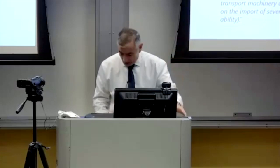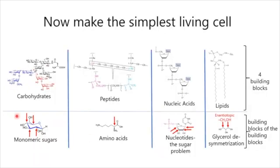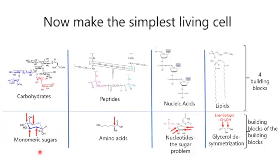Remember the requirements we said the cell has to have. First you have to make all the monomeric sugars, which nobody's ever made. Then you have to make all of the amino acids in chirally pure form, which no one's ever made. You can get a bunch of racemic amino acids from Miller-Urey type experiments and other experiments, but never in chirally pure form.